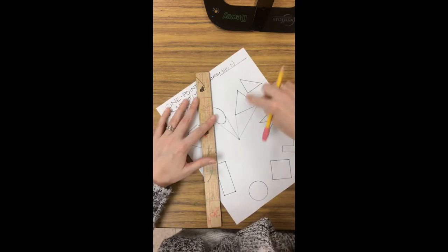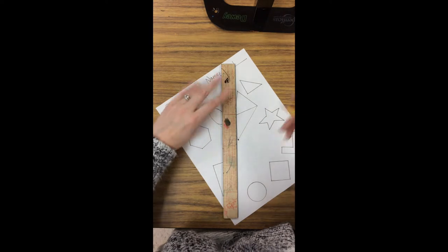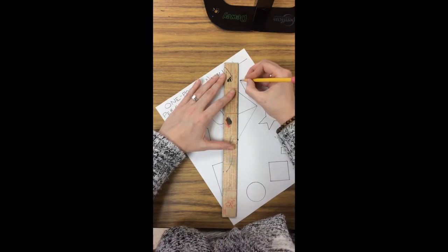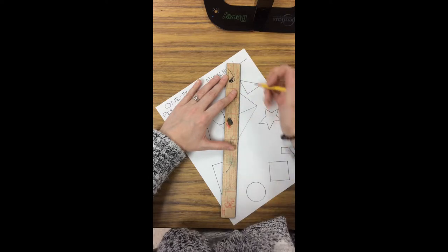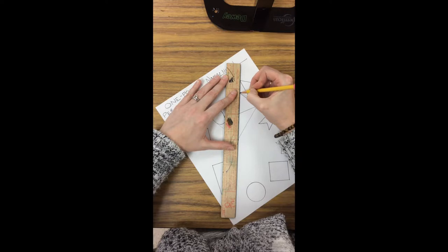Now if a shape is behind another shape to get to the vanishing point, it's a little tricky. So let's look at how to do that. So I'm still going to line up my corners with the vanishing point, but I'm going to draw my line from the corner until I hit this shape and then stop.